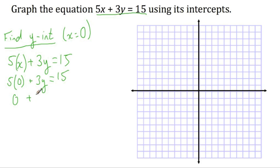5 times 0 is 0, plus 3y equals 15. 0 plus 3y is 3y, and 3y equals 15.